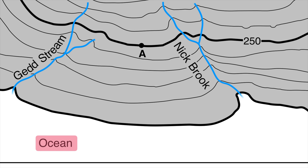Furthermore, I know that the elevation of the coastline — the bottom line here — is going to be zero. That's sea level. And if I see my next index contour up around where point A is, that has an elevation of 250. So if that's 250 and the ocean is zero, my streams have to be flowing downhill from higher elevation to lower elevation. So both of these streams are flowing towards the ocean.